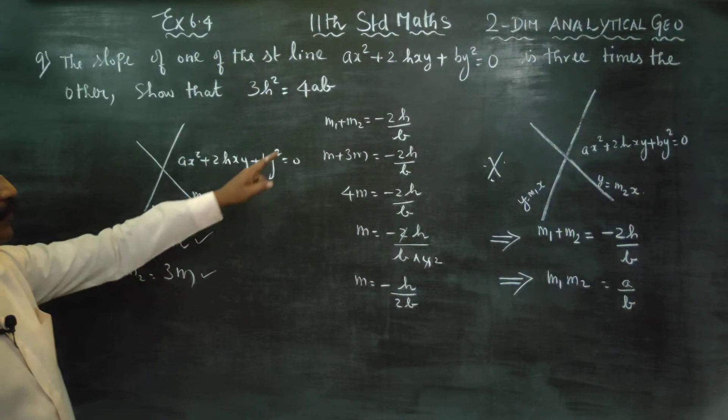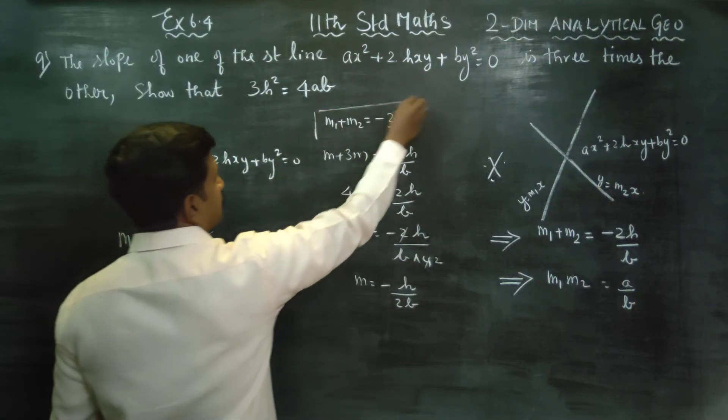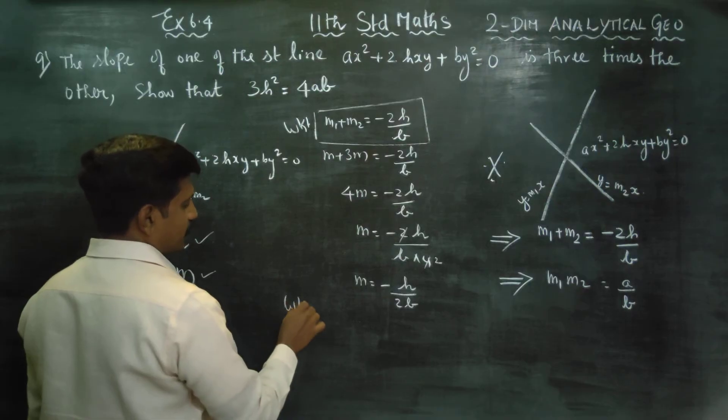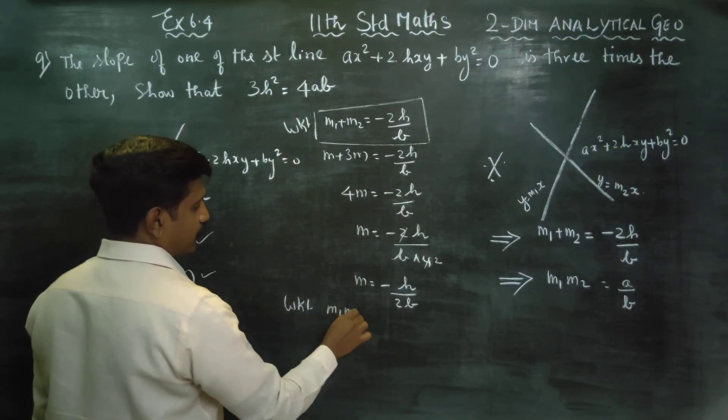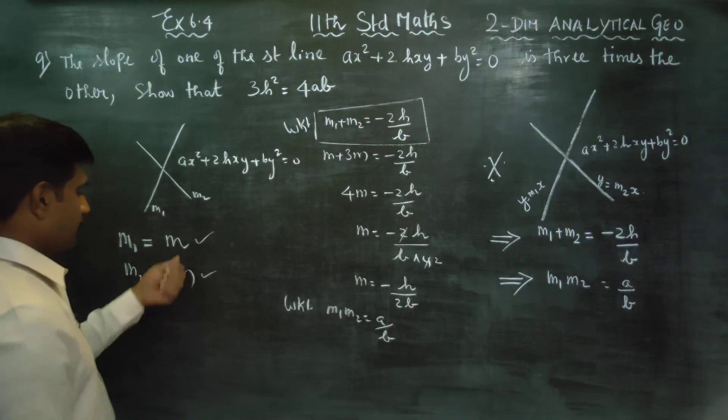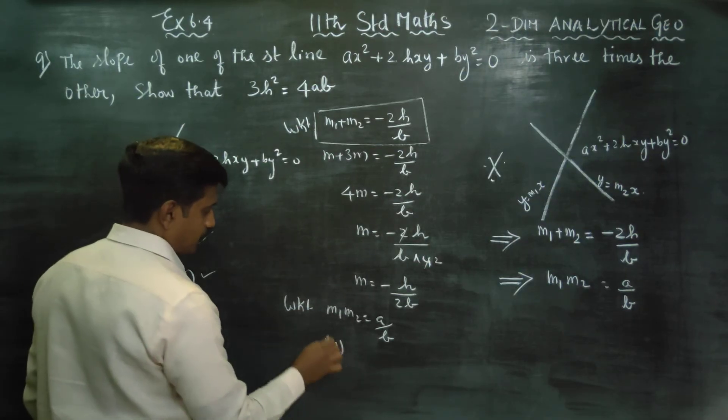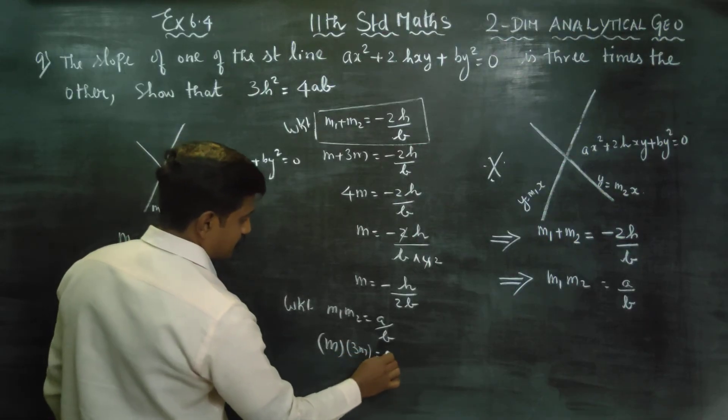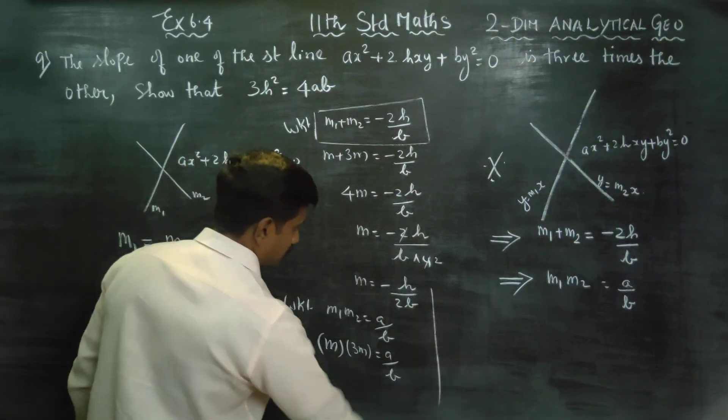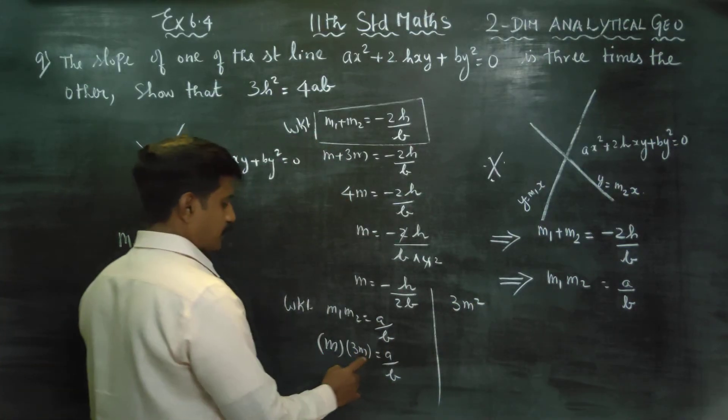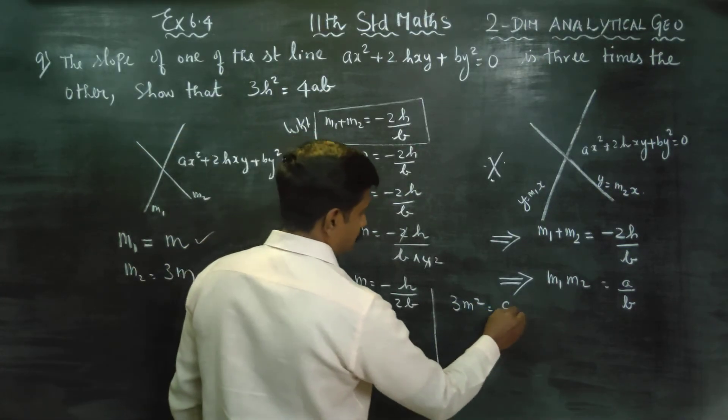Then, after m1 plus m2 is equal to minus 2h by b, we know that, again we can write that, we know that m1 into m2, m1 into m2 is equal to a by b. What is my m1? m1 is m. What is my m2? m2 is 3m. Is equal to a by b. Then, this will be 3m square. 3m into m is m square. Is equal to a by b.